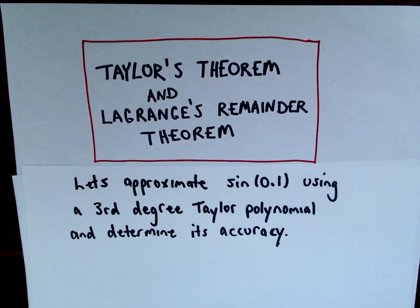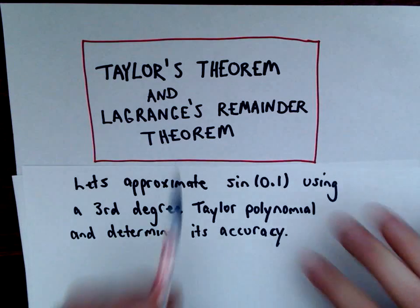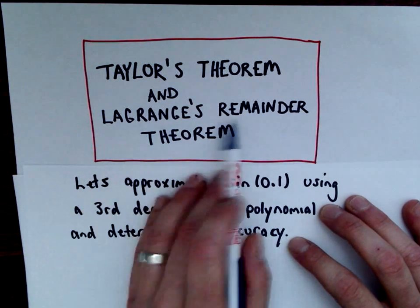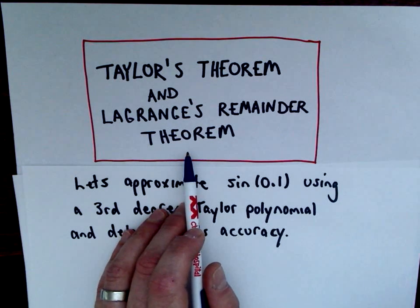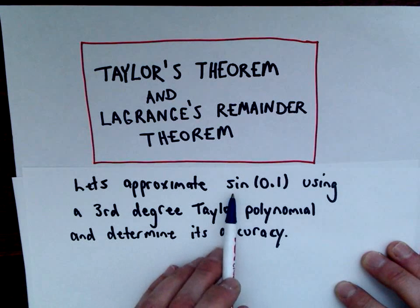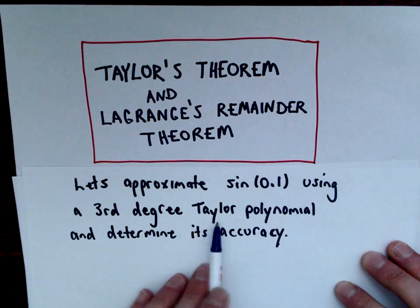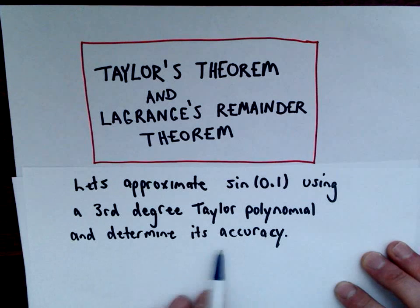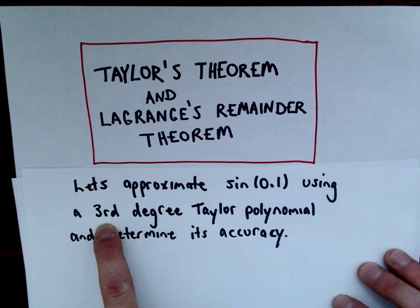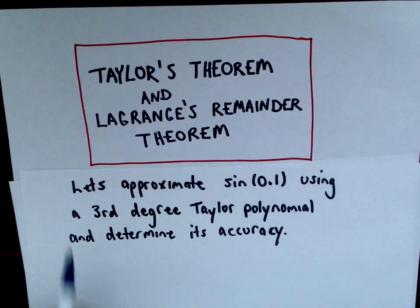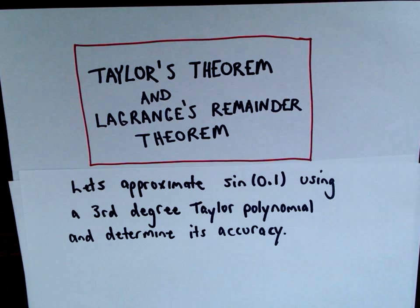In this video I would like to talk about Taylor's Theorem and Lagrange's Remainder Theorem. This has to do with Taylor polynomials and approximating Taylor polynomials. The meat of what we're going to talk about is using Lagrange's Remainder Theorem to determine our maximum errors. We're going to approximate sine of 0.1 using a third degree Taylor polynomial and determine its accuracy.